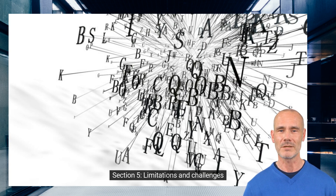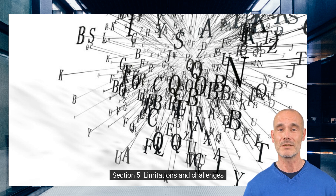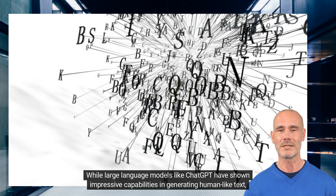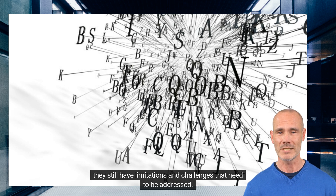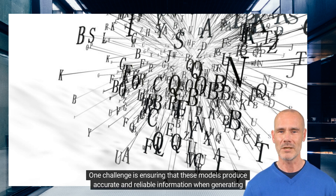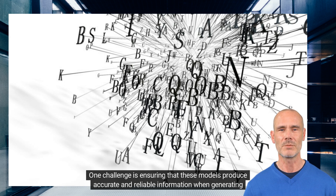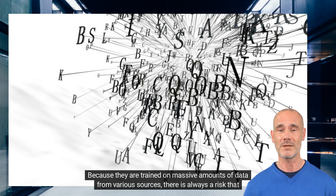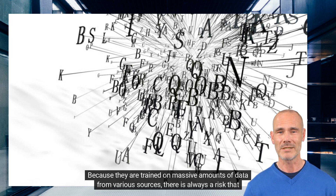Section 5. Limitations and Challenges. While large language models, like ChatGPT, have shown impressive capabilities in generating human-like text, they still have limitations and challenges that need to be addressed. One challenge is ensuring that these models produce accurate and reliable information when generating text. Because they are trained on massive amounts of data from various sources, there is always a risk that they may produce inaccurate or misleading information.